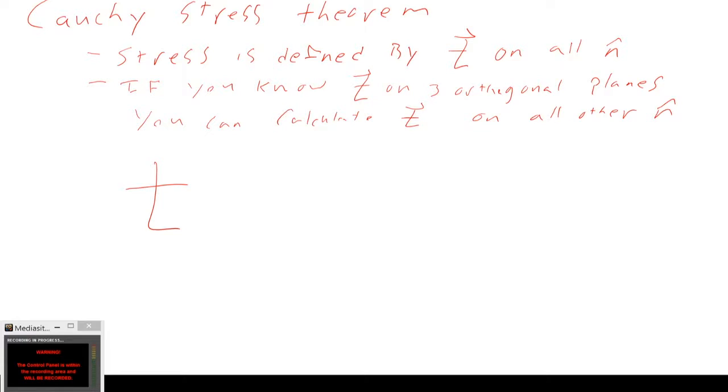Just a notation. We'll say the traction on plane n, and that's equal to the normal vector dotted with our stress in terms of indicial notation. We write it like this.